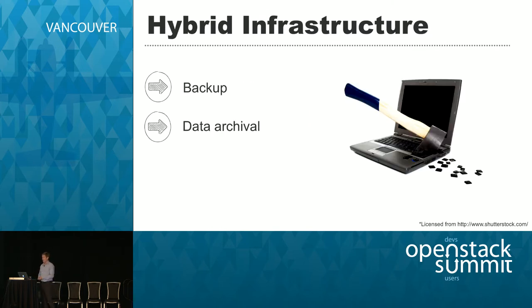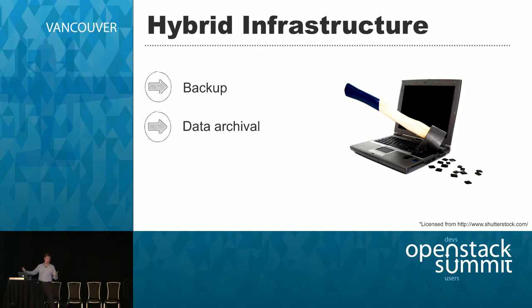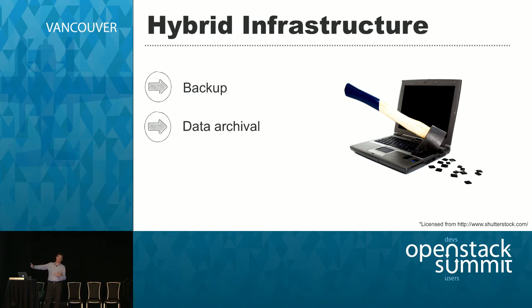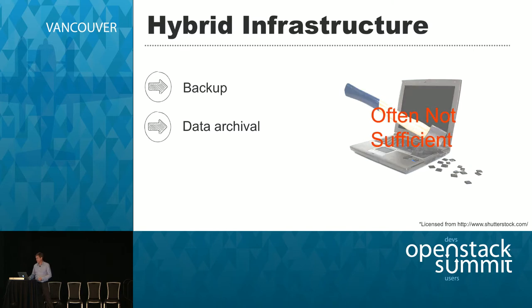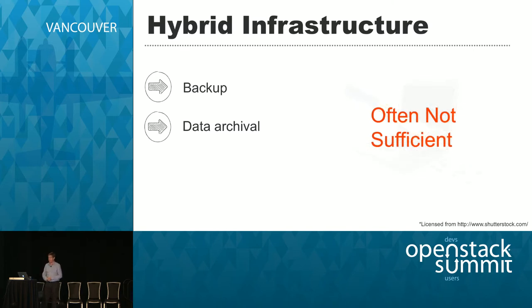The next approach discussed quite a bit is hybrid infrastructure, sometimes called hybrid clouds. VMware did a great job coining this term. It focuses on the physical connectivity of on-premise resources with cloud — connecting on-premise data centers with cloud resources. You might use this for backup or data archival. While this can be useful, it doesn't really solve any of the hard problems about how to take your application and make it take advantage of cloud features. Just connecting the wires together doesn't solve the hard problems — not sufficient for most enterprise applications.